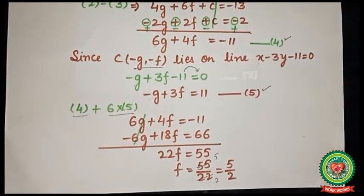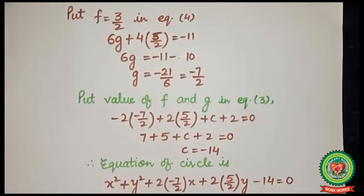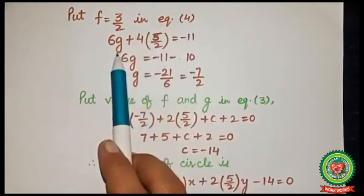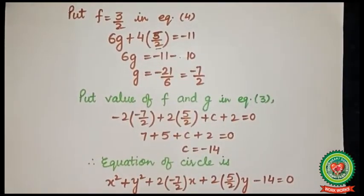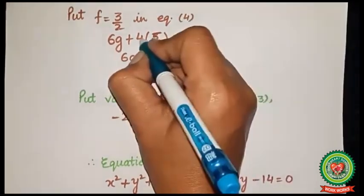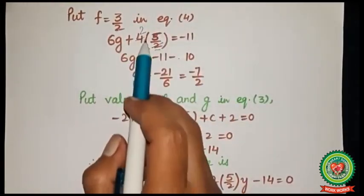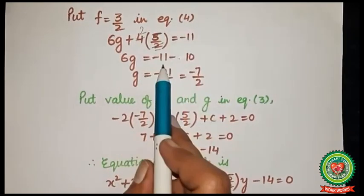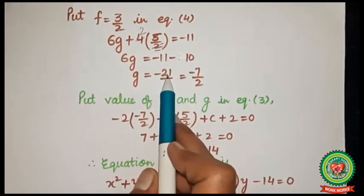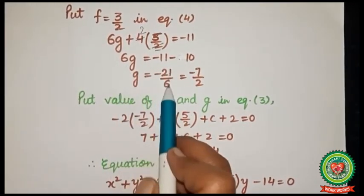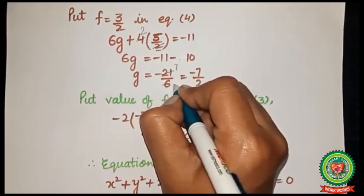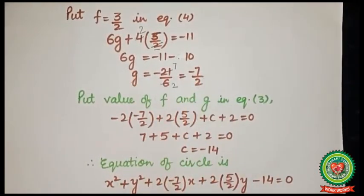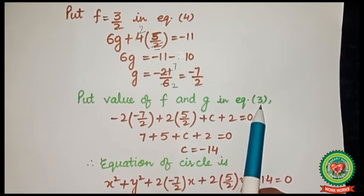Substituting f = 5/2 into equation 4: 6g + 4(5/2) = -11, so 6g + 10 = -11, giving 6g = -21 and g = -21/6 = -7/2.